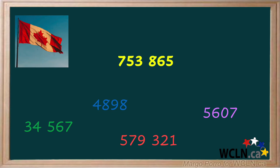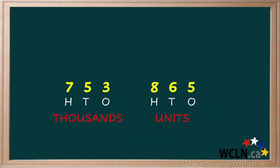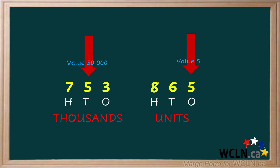Now back to place value. It helps us to know the value of a number. Each five in this number has a different value. This five is in the ones place of the units period — it is simply worth five. This five is in the ten thousands place; it has a value of fifty thousand. There are four places to the right of the digit, so you'd write down the five followed by four zeros, one for each place to the right.